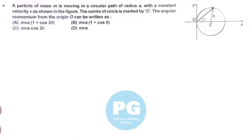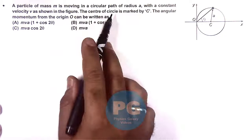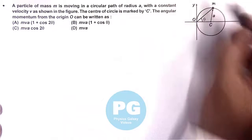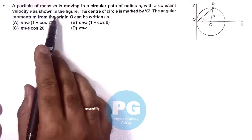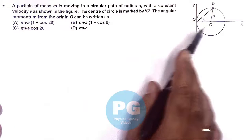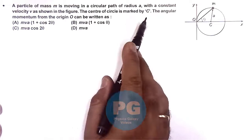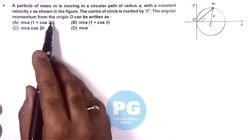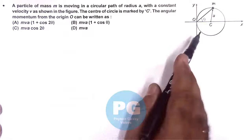In this question a particle of mass M is moving in a circular path of radius A. This is the particle of mass M with a constant velocity V as shown in figure. The center of circle is marked by C. We are required to find the angular momentum from the origin O for this particle.